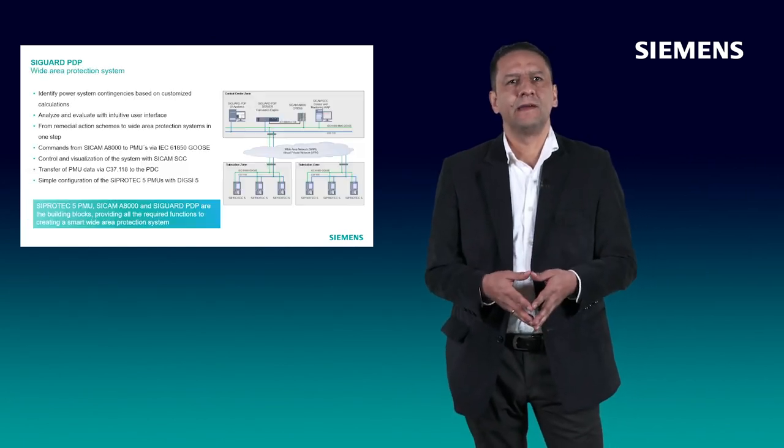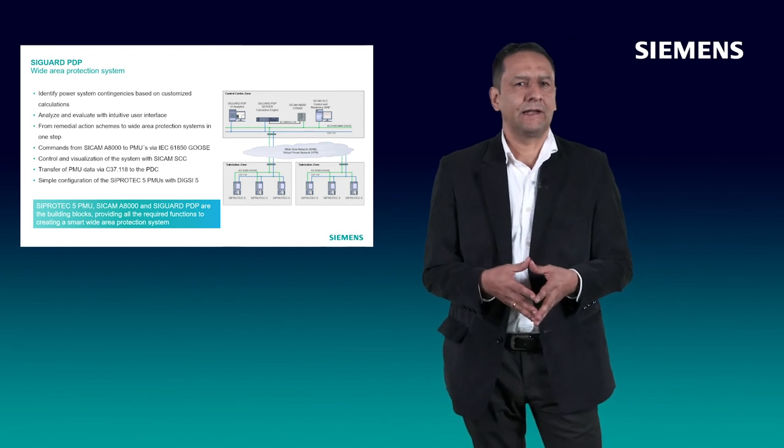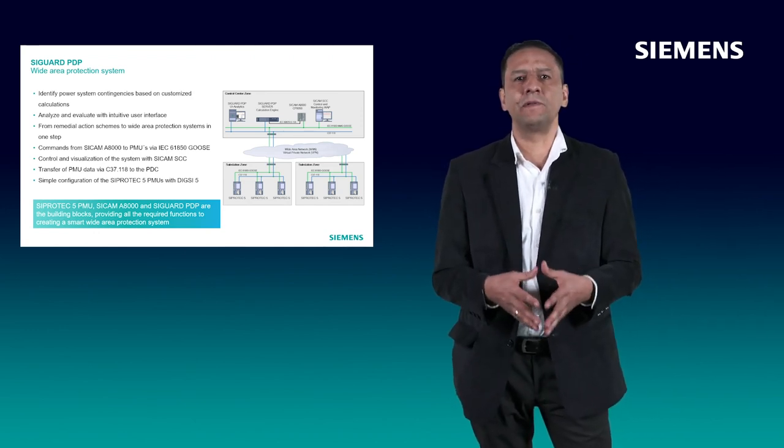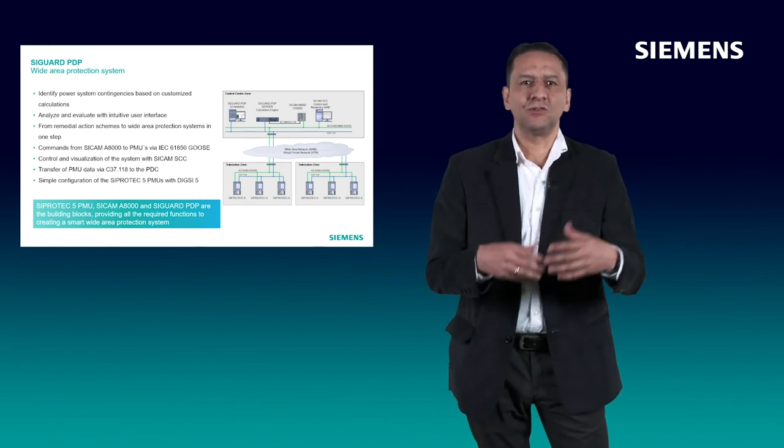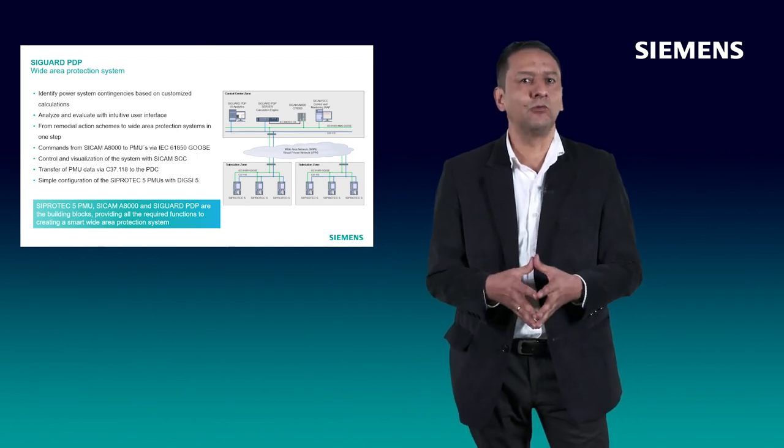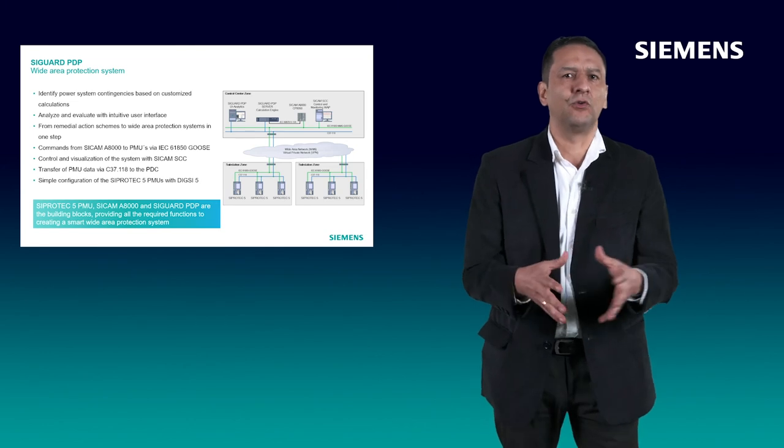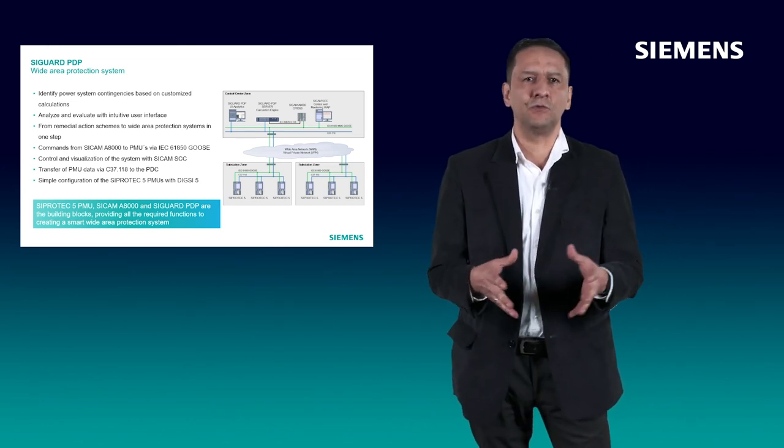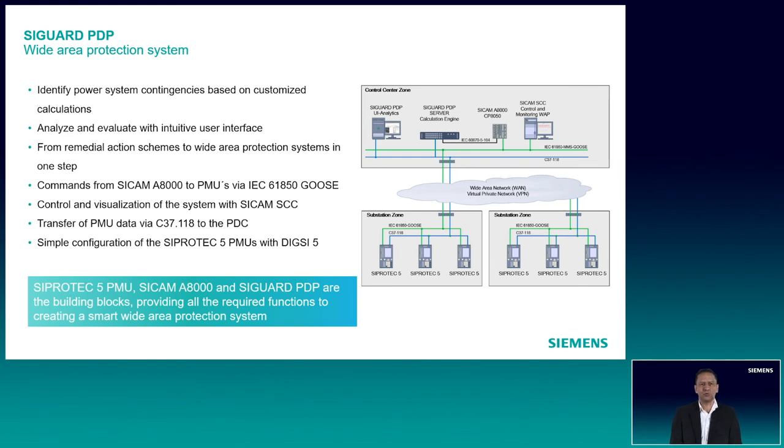A Wide Area Protection System can avoid that the angular stability gets more critical by, for example, tripping some loads in the system. Based on system studies and with the identification of the contingencies that could bring the system into problems with angular stability, the following steps can be done with the help of SAGUARD PDP and PMUs. First, identify power system contingencies based on customized calculations. Second, send commands once the contingency is identified to the PMUs via IEC 61850. Third, enable or disable logics with an intuitive HMI.